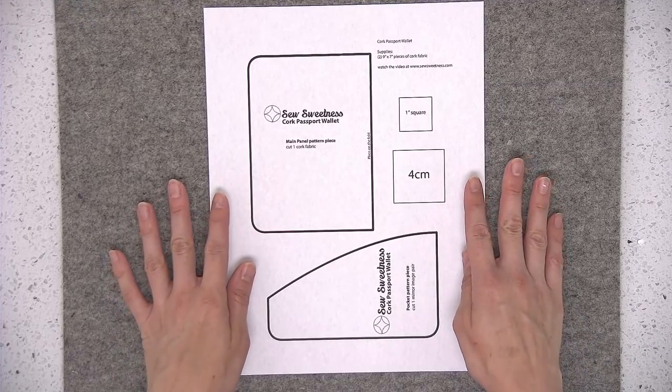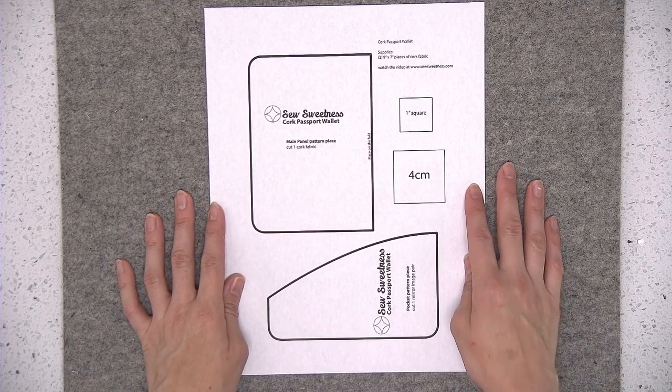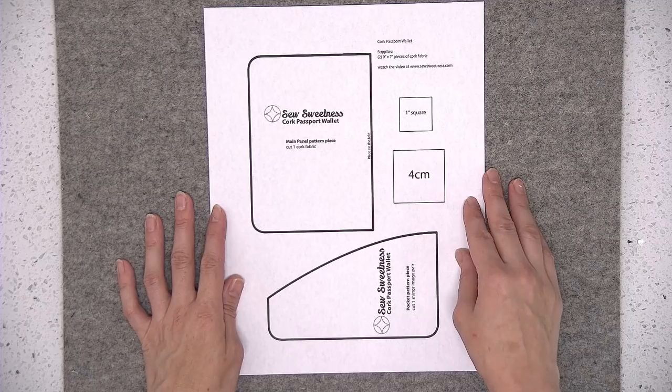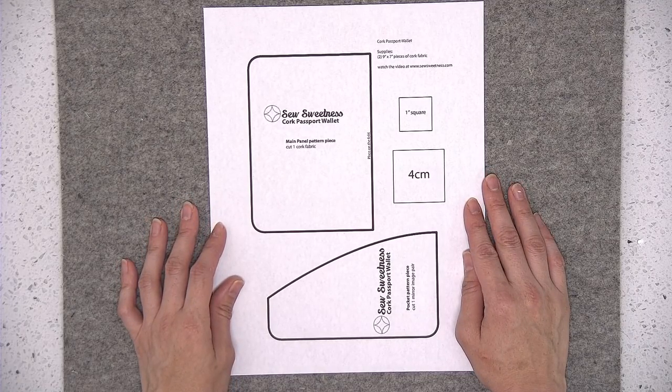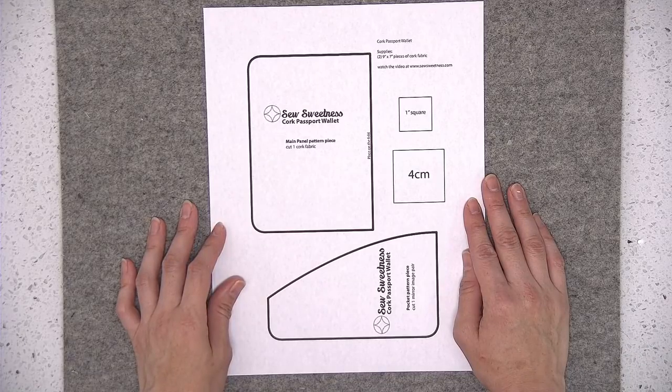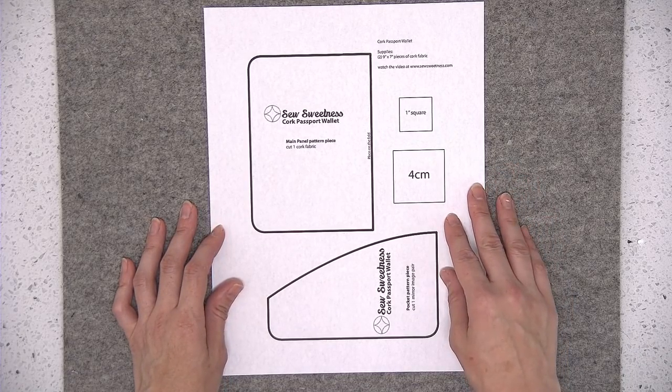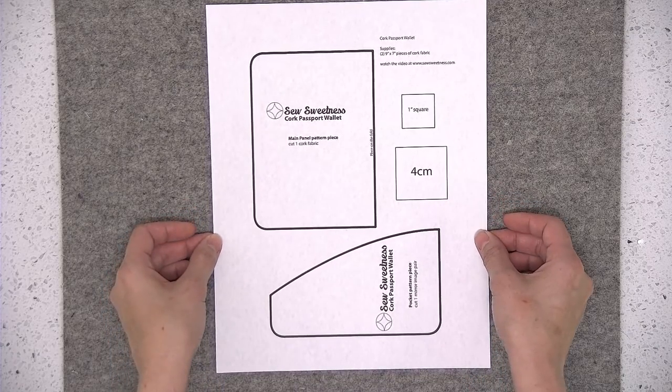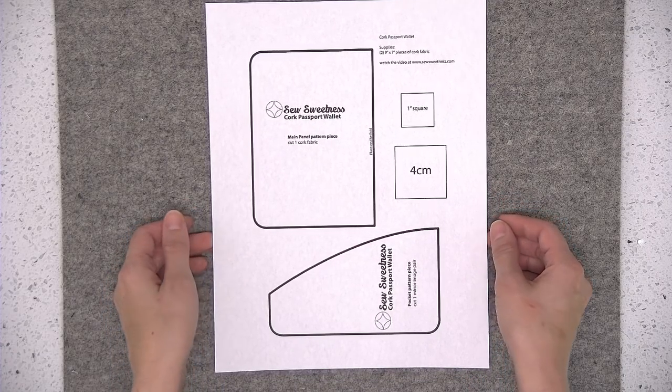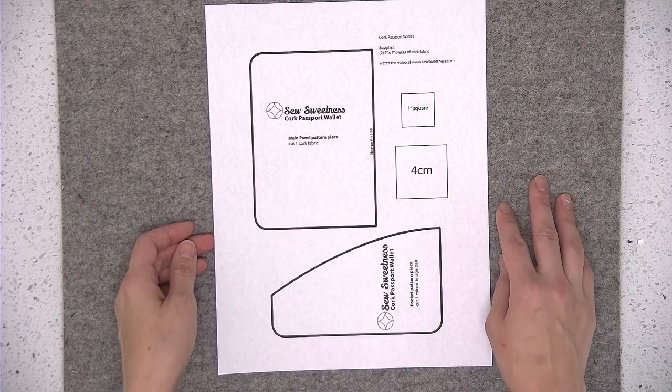Okay before we begin you'll need to print out the page with the templates and to do that you want to open the template page using Adobe Reader. Adobe Reader is a free program that you can download to your computer or device if you don't have it already. You don't want to open the templates in a web browser and print from there. When using Adobe Reader and your printer settings you want to print at actual size, not scaling or fit to page.